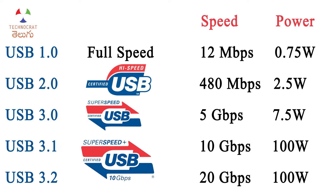USB 3.0 is super speed, supporting 5 Gbps data transfer and 7.5 watts power. USB 3.1 supports super speed+ at 10 Gbps and up to 100 watts power. USB 3.2 doubles the speed to 20 Gbps. USB 3.0 has a super speed logo on storage devices.